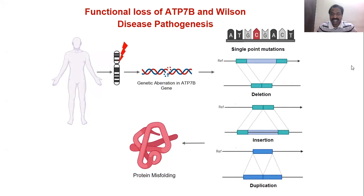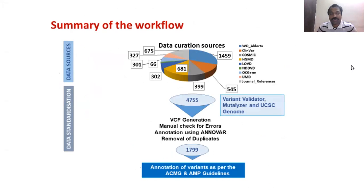When we started our project, we tried to collect all the variants reported so far. We used different databases including the Wilson disease database, ClinVar, LOVD, and literature surveys. We could collect 4,755 variants associated with Wilson disease. After careful checking and removal of duplicates, we were able to identify 1,799 unique variants associated with Wilson disease.